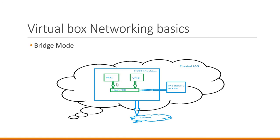So these VMs can reach the host machine, and the host machine can reach the VMs directly without any port forwarding. The machines in the LAN of the host machine can also directly connect to the VMs without any port forwarding. And these VMs can access the internet as well. So let us see this concept using hands-on.